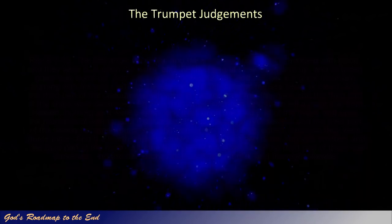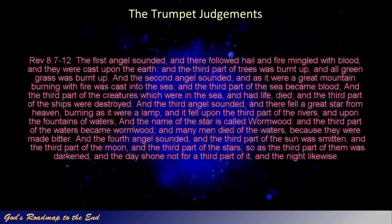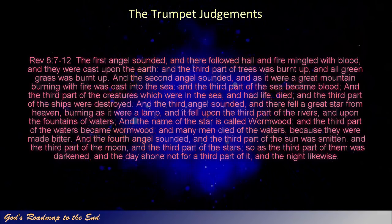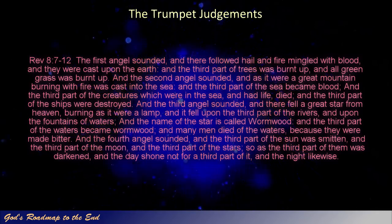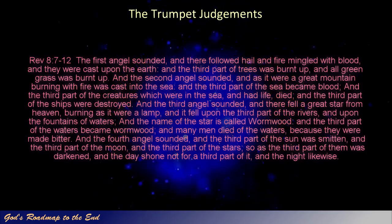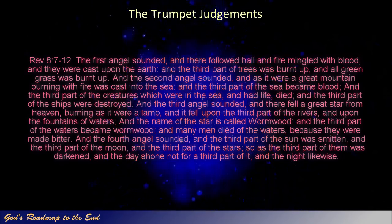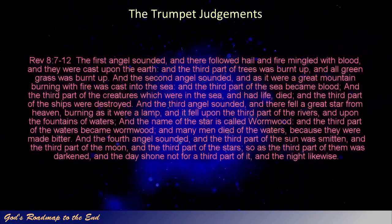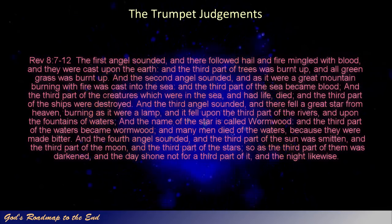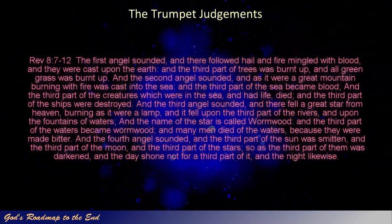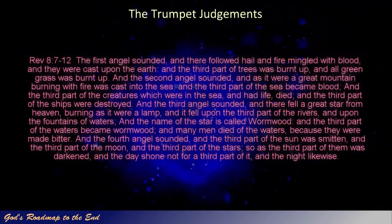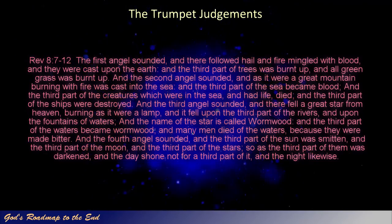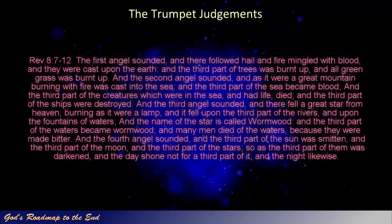This is what we read. Revelation 8 verses 7 to 12: 'The first angel sounded, and there followed hail and fire mingled with blood, and they were cast upon the earth, and the third part of trees was burnt up, and all green grass was burnt up. And the second angel sounded, and as it were a great mountain burning with fire was cast into the sea, and the third part of the sea became blood, and the third part of the creatures which were in the sea and had life died, and the third part of the ships were destroyed. And the third angel sounded, and there fell a great star from heaven, burning as it were a lamp, and it fell upon the third part of the rivers, and upon the fountains of waters — and the name of the star is called Wormwood — and the third part of the waters became Wormwood, and many men died of the waters because they were made bitter. And the fourth angel sounded, and the third part of the sun was smitten, and the third part of the moon, and the third part of the stars, so as the third part of them was darkened, and the day shone not for a third part of it, and the night likewise.'